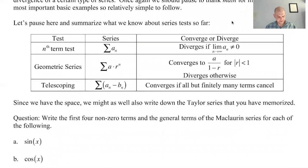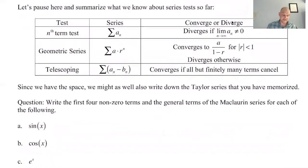So these are the series tests that we have so far. We've got the N term test for divergence, and that's it. Geometric series, they converge if the absolute value of R is less than one. They converge to the first over one minus the ratio is how I think of it. They diverge if the absolute value of R is greater than or equal to one. And then telescoping series converge if they are telescoping, basically.